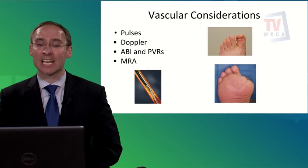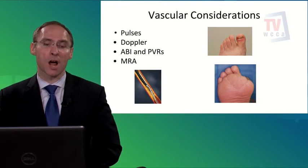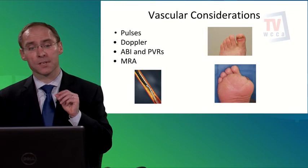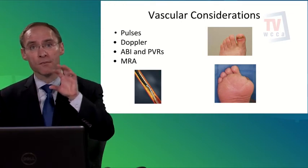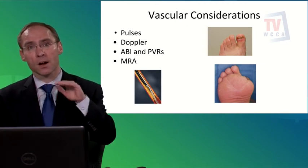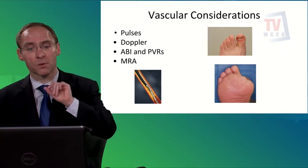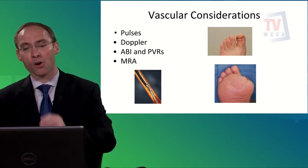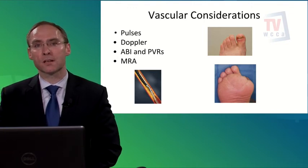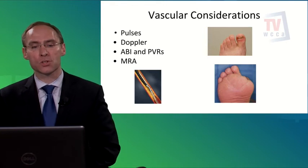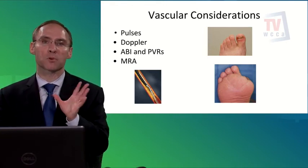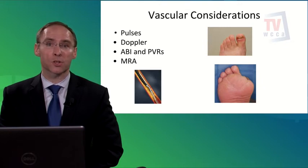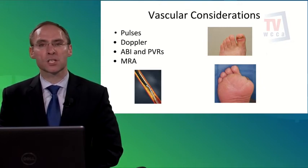Circulation considerations include checking for palpable pulses, using a Doppler machine to hear pulses, performing ankle-brachial index (ABI) measurements with blood pressure cuffs at different segments, and pulse volume recordings to assess blood flow volume. An MRA — magnetic resonance angiography — looks at the arteries to identify circulation problems. More advanced tests are performed by a vascular surgeon; simpler checks like pulses and Dopplers can be done by your doctor or podiatrist. Sometimes what appears to be an ingrown toenail is actually a circulatory problem that can lead to amputation.